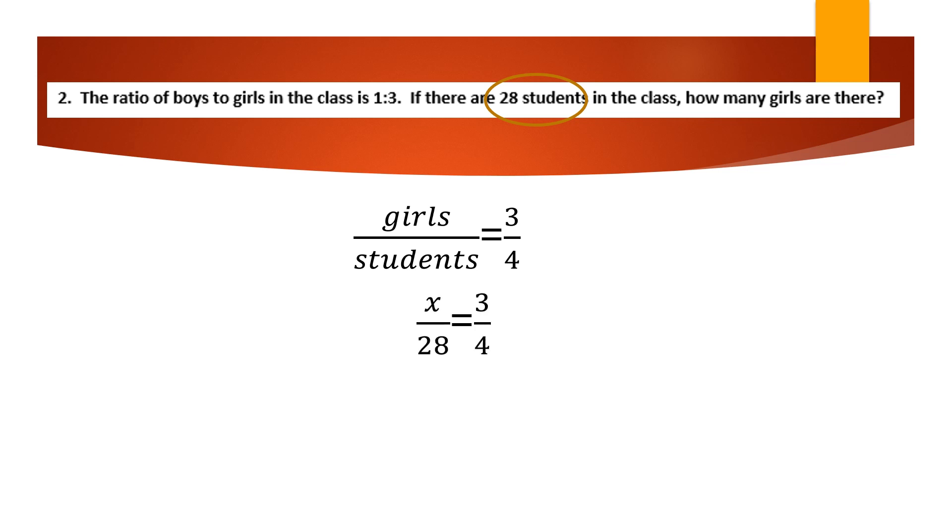From there, it's going to be that same setup. 28 is the students, so I put it in the corresponding spot of my proportion, cross multiply and solve.